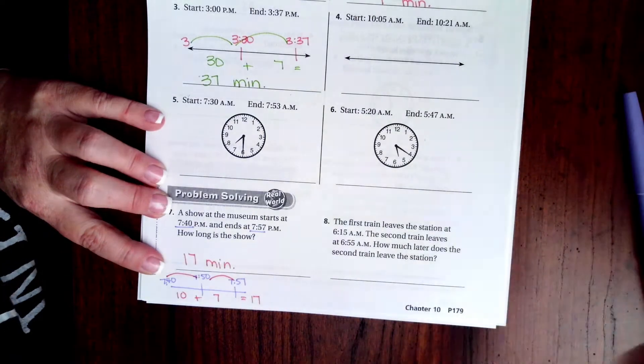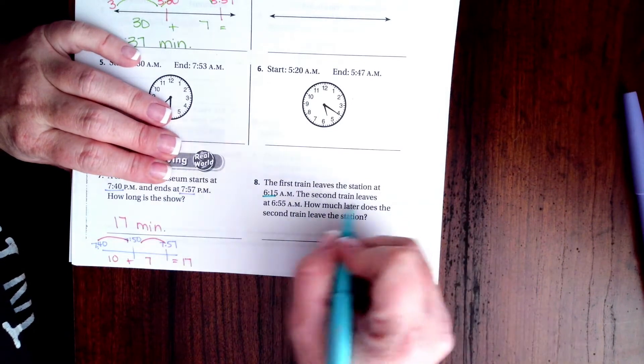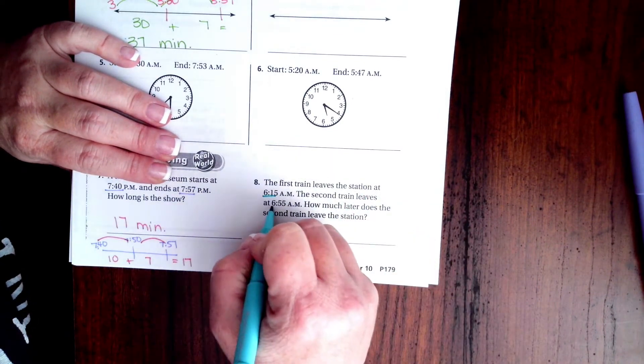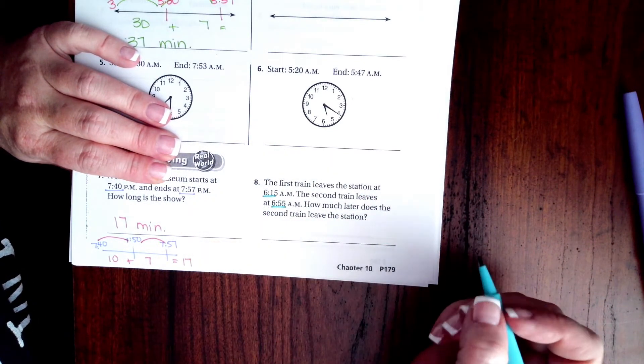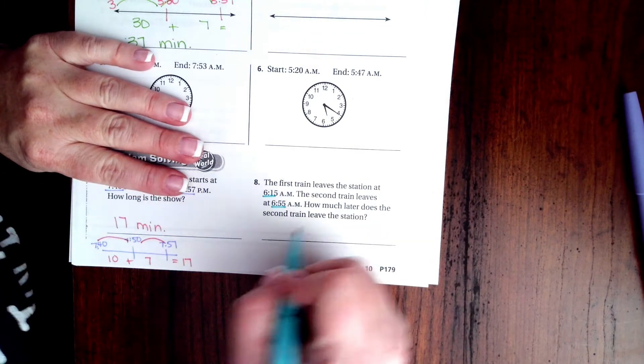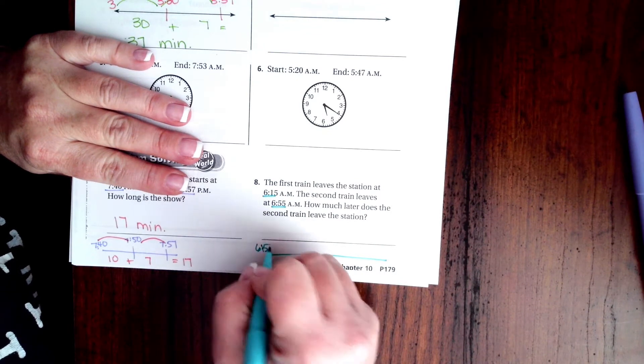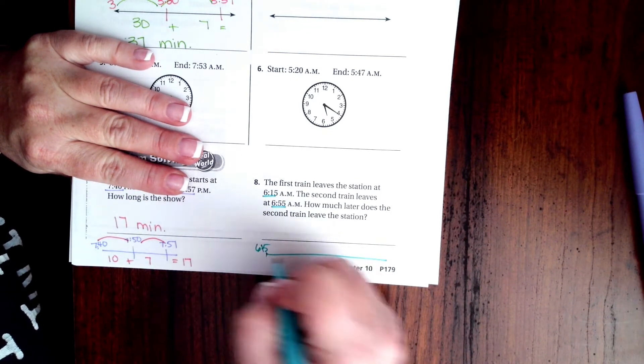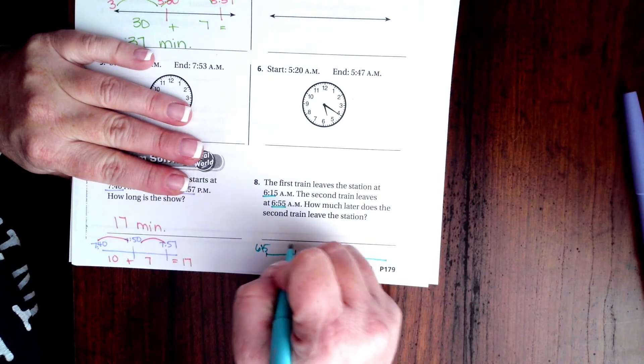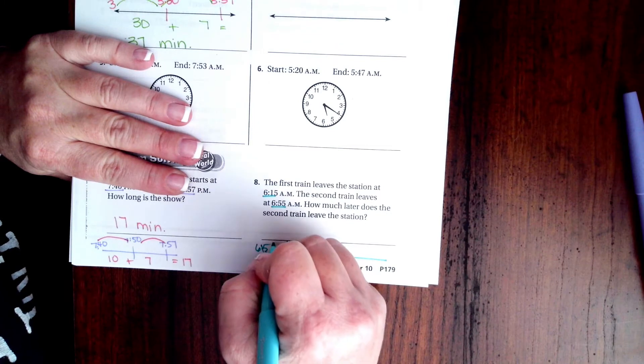All right, the first train leaves the station at 6:15. The second train leaves the station at 6:55. How much later does the second train leave the station? So we're going to do our little number line. We're going to start at 6:15, let's do 6:30, you know let's even put one in for 6:20.